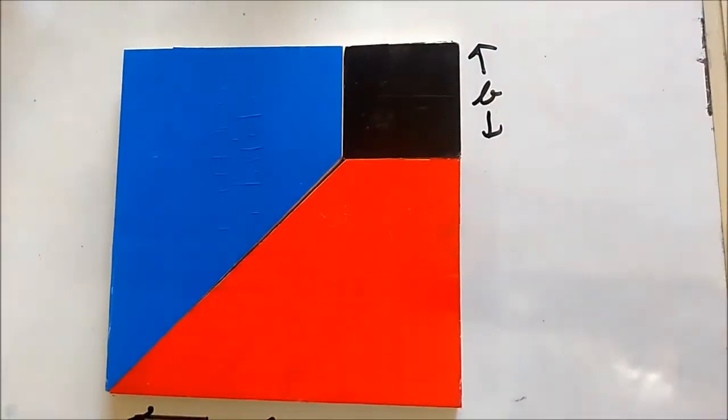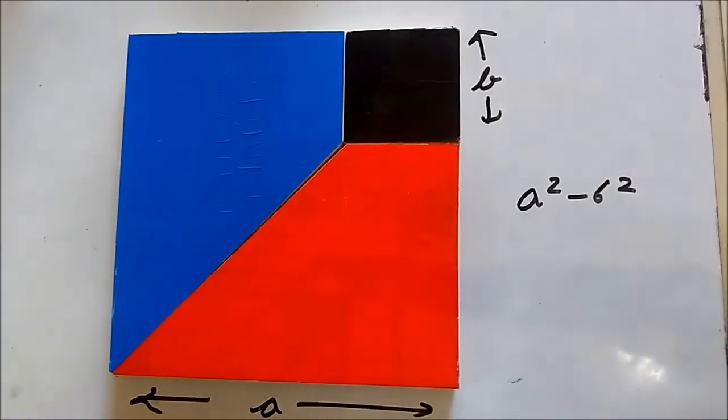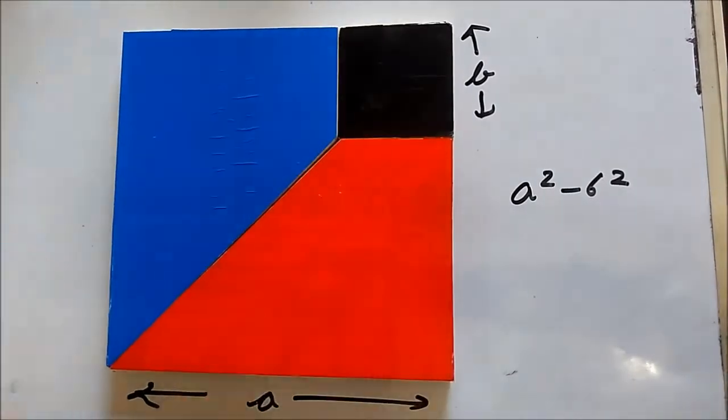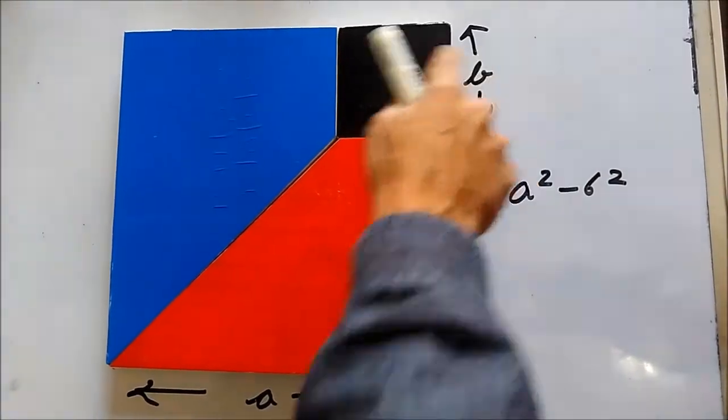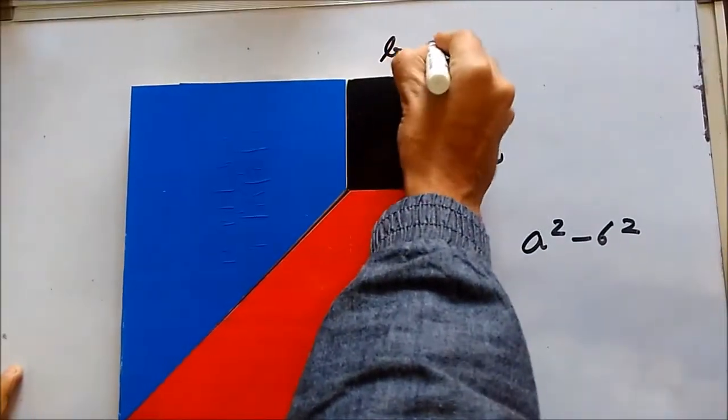So now what I need to find is a square minus b square. Look carefully, the a square is the area of this big square, right? And I need to subtract this b square from it, and b square will be equal to the area of this black colored square.